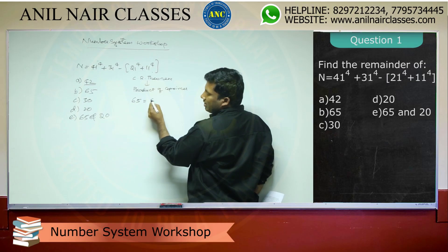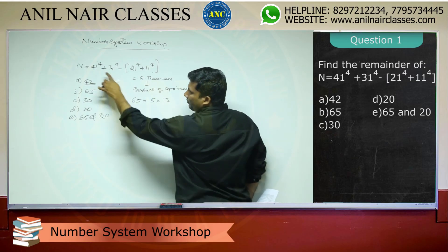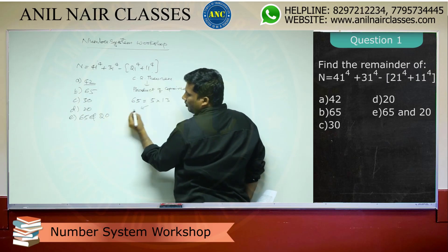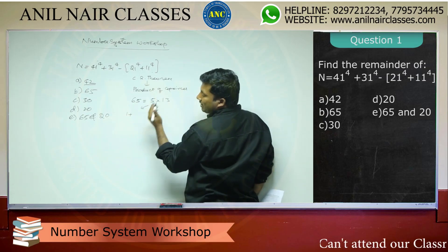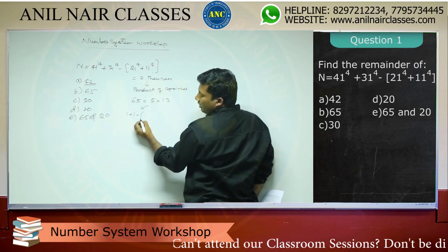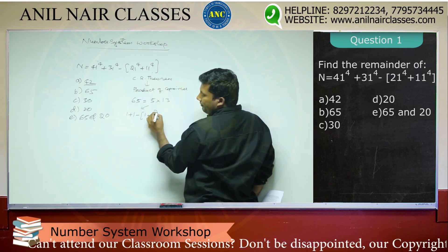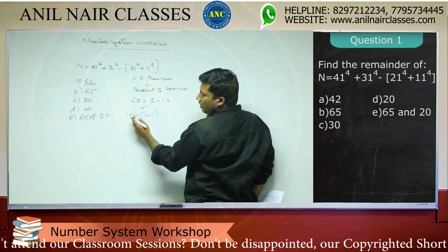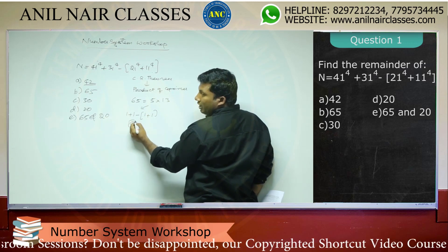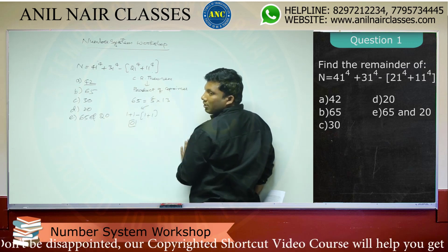65 is 5 times 13. Dividing by 5: 41 mod 5 gives remainder 1, so 41⁴ mod 5 = 1. Similarly 31 mod 5 = 1, giving 1. 21 mod 5 = 1, giving 1. 11 mod 5 = 1, giving 1. So the expression gives 1 + 1 - 1 + 1 = 2 - 2 = 0. Remainder is 0, meaning it is divisible by 5.